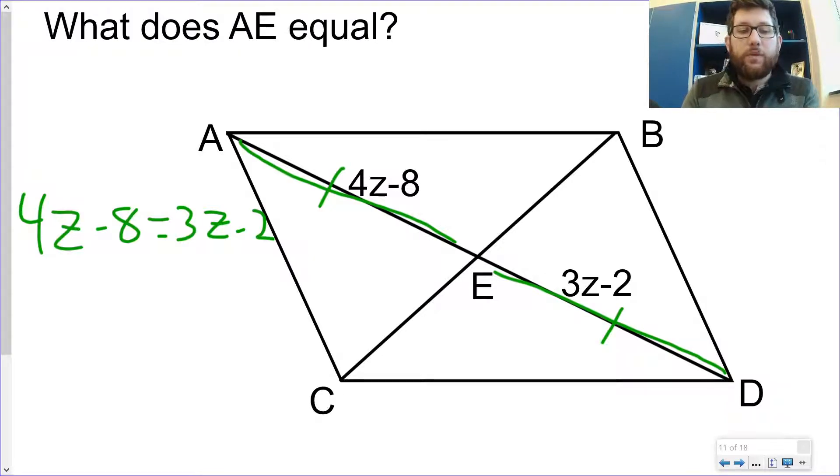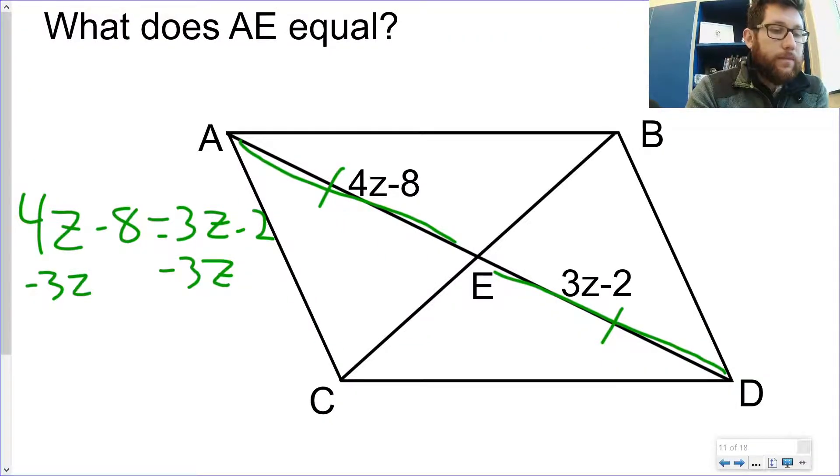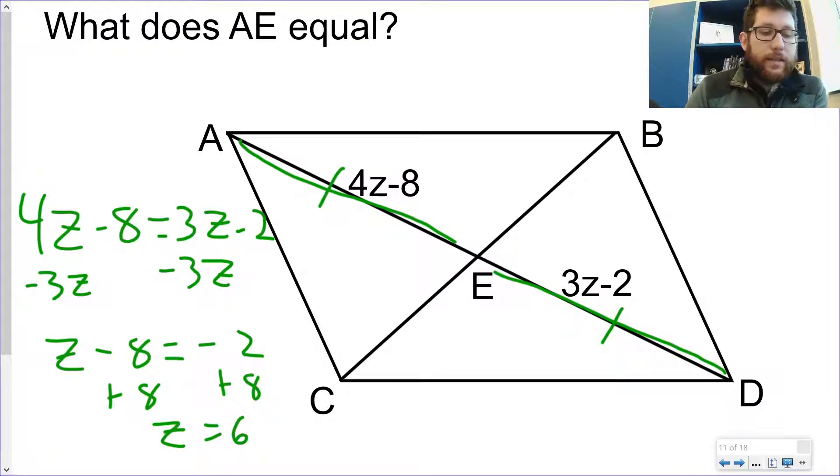Now this is a pretty easy one. You could plug this into Desmos just like I showed you, or we can solve this by hand. I'm going to solve this one by hand. Minus 3z. So I get z minus 8 is equal to negative 2. I'm going to add 8 to both sides. I get z is equal to 6.